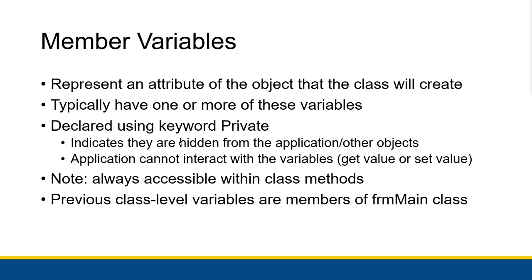When you have a private member variable, those variables are always accessible within the class methods — they're just not accessible outside of the class, not accessible from the form or from other objects. Previously, when we talked about class-level variables created in our main form and defined them using private, those are actual member variables of the form's main class. Only the object instantiated from a class should be able to interact with its own member variables — no one else.